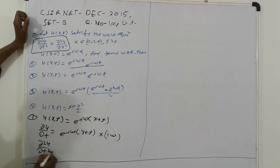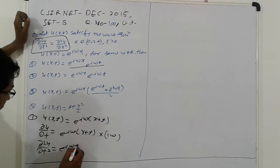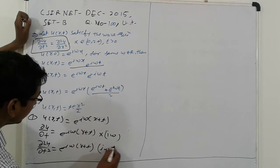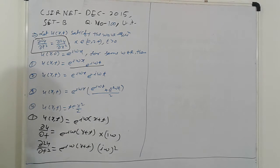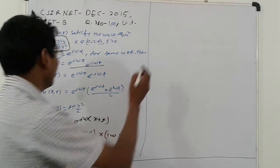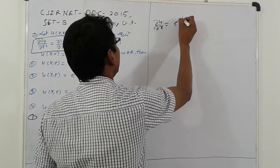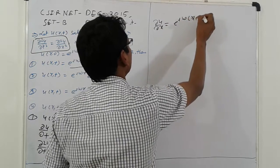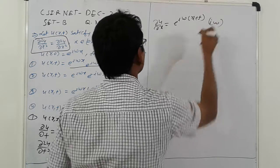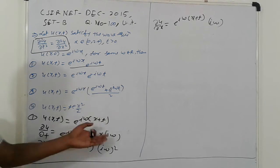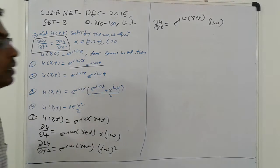Next, ∂²u/∂t² equals e raised to iω(x+t) into (iω)². Next, ∂u/∂x is found: ∂u/∂x equals e raised to iω(x+t) into iω. Again, taking the partial derivative with respect to x.